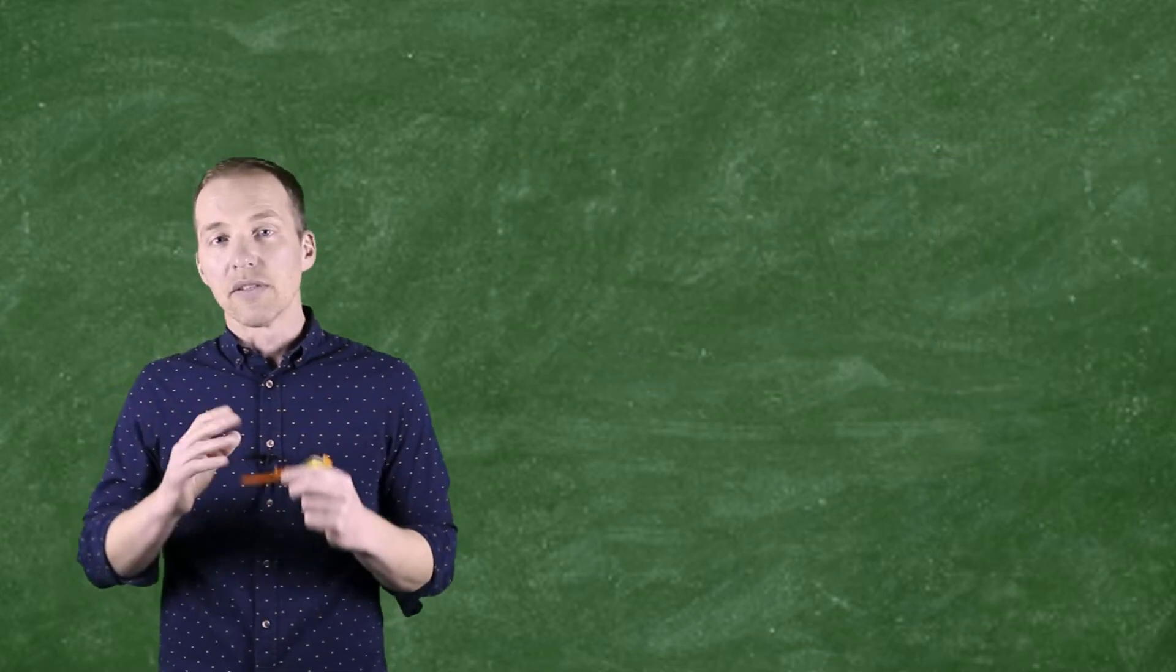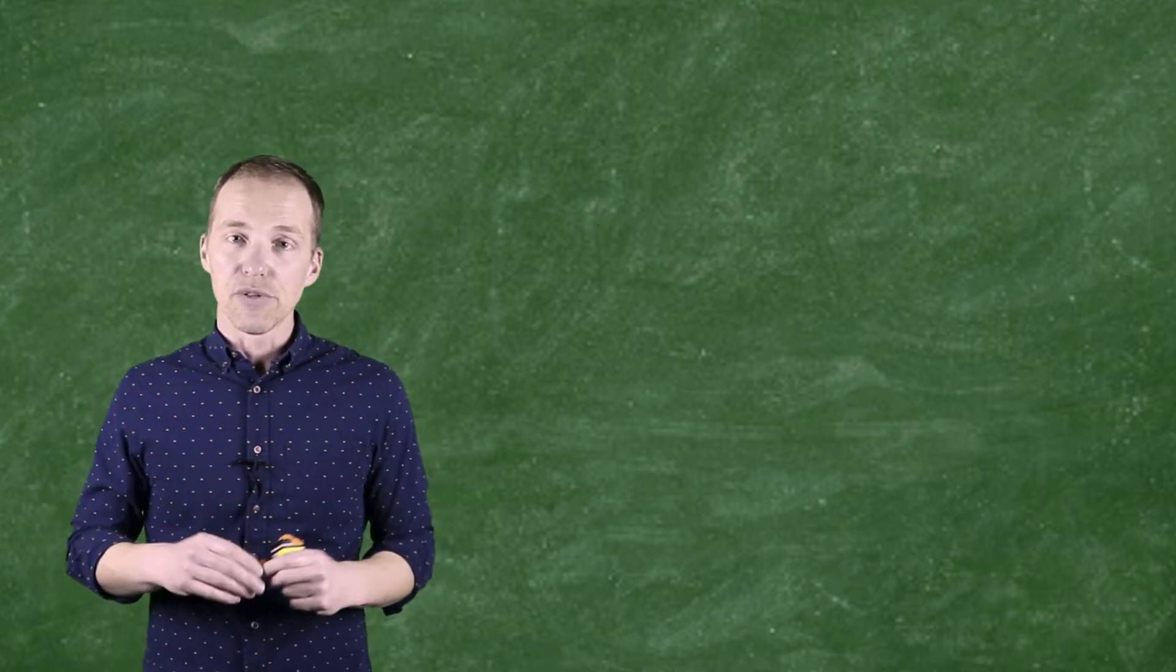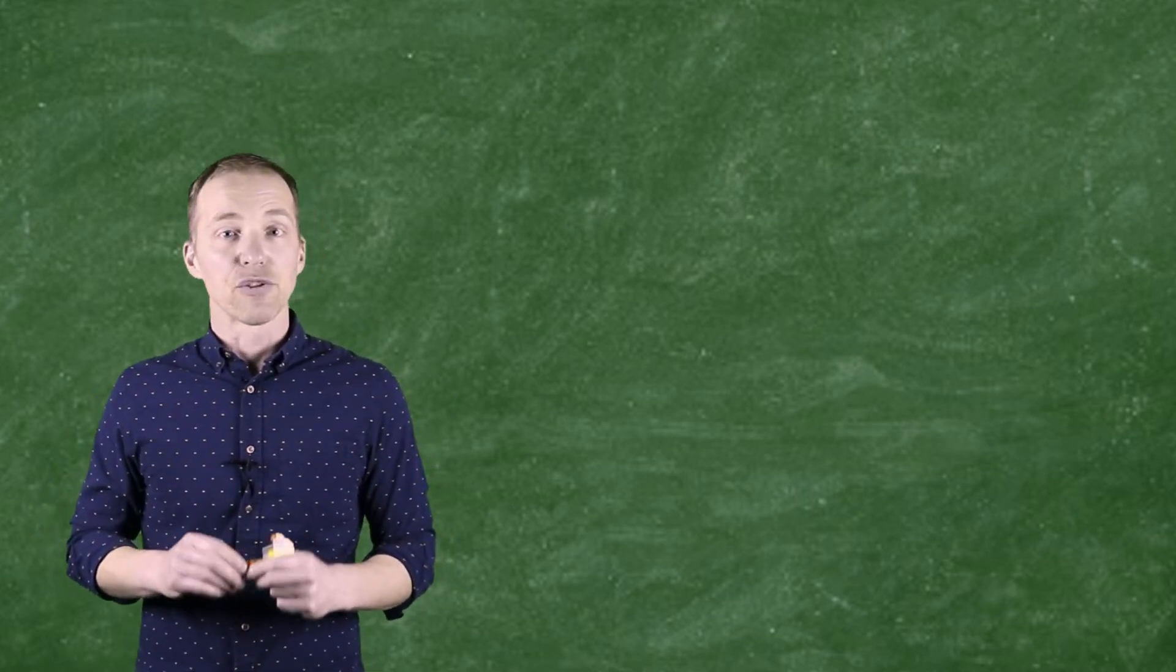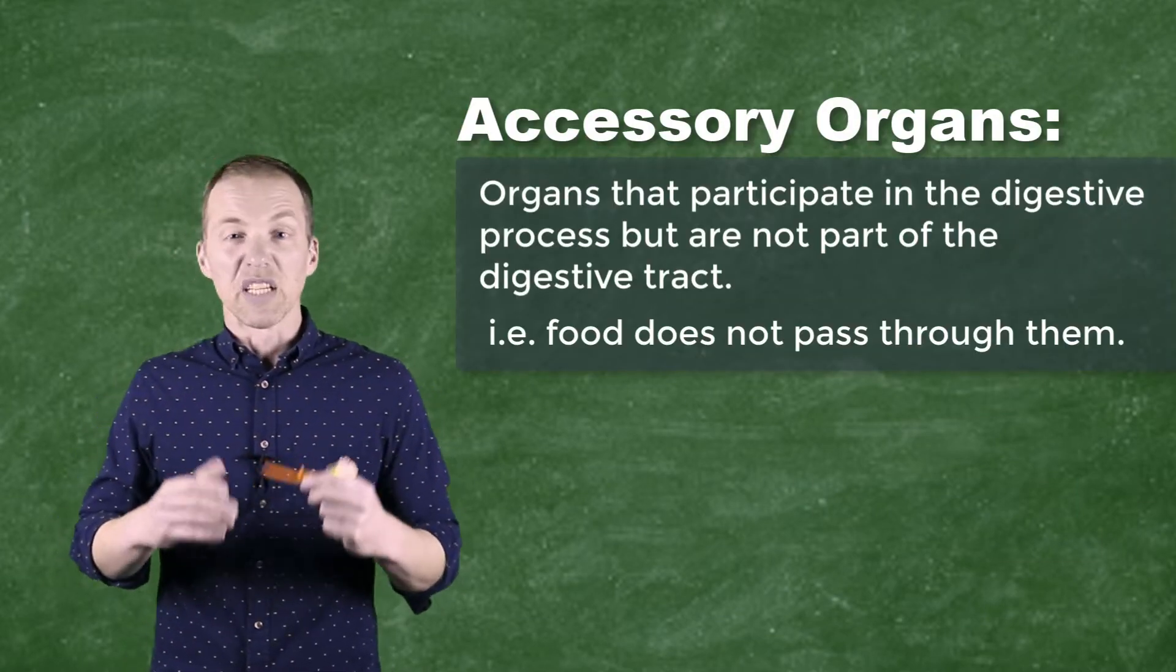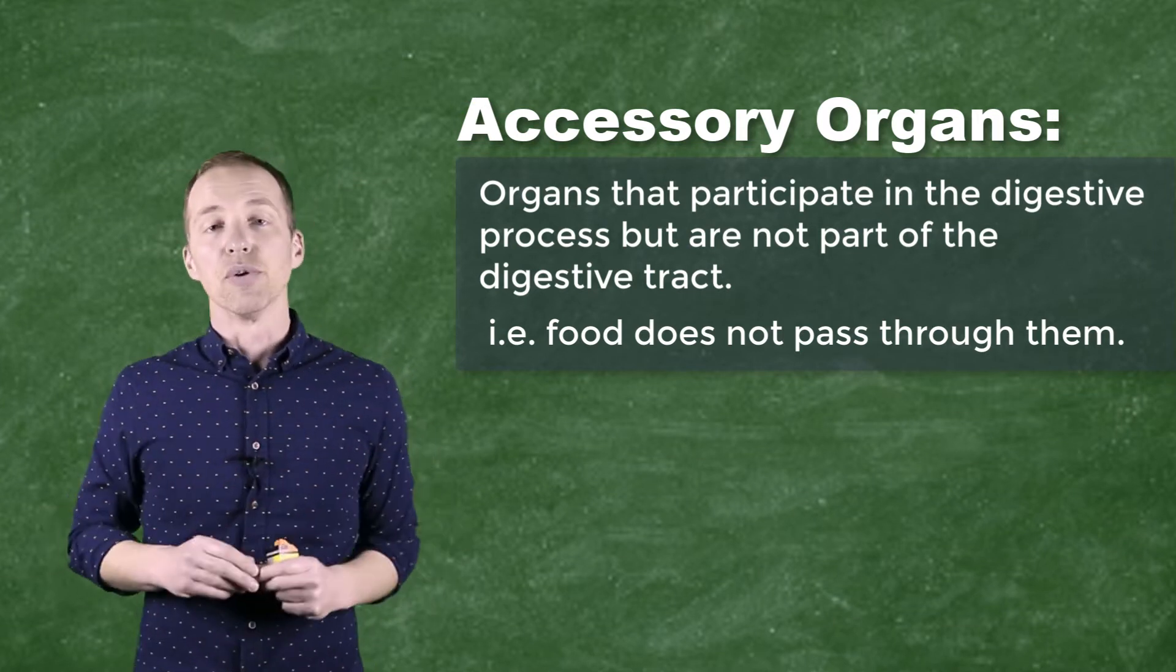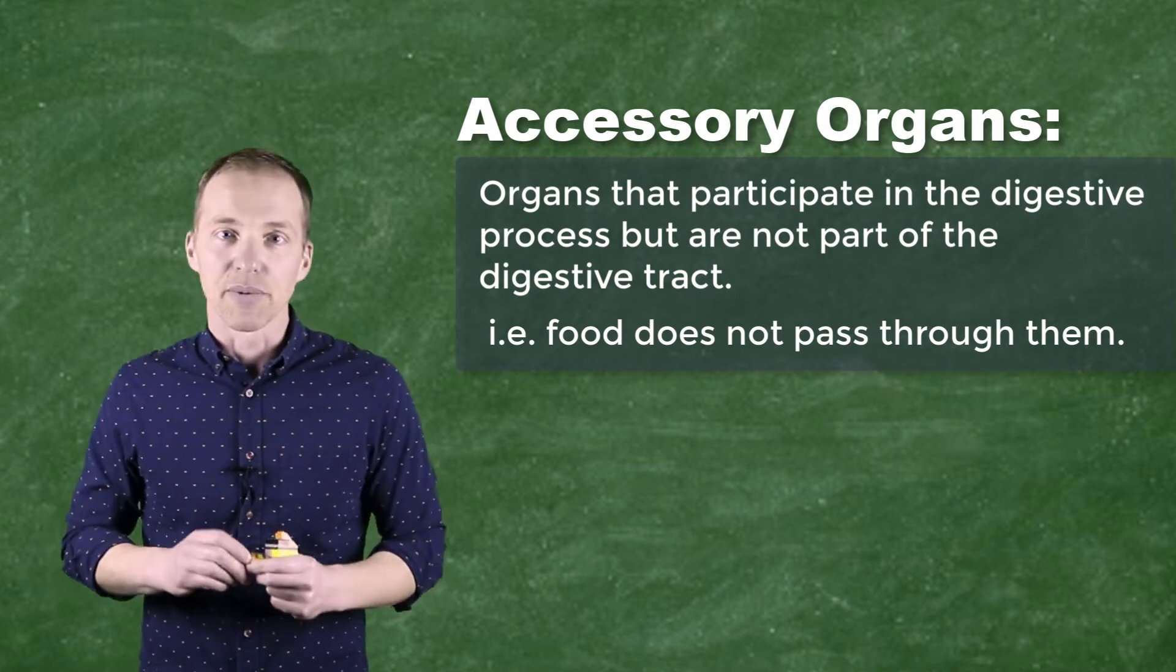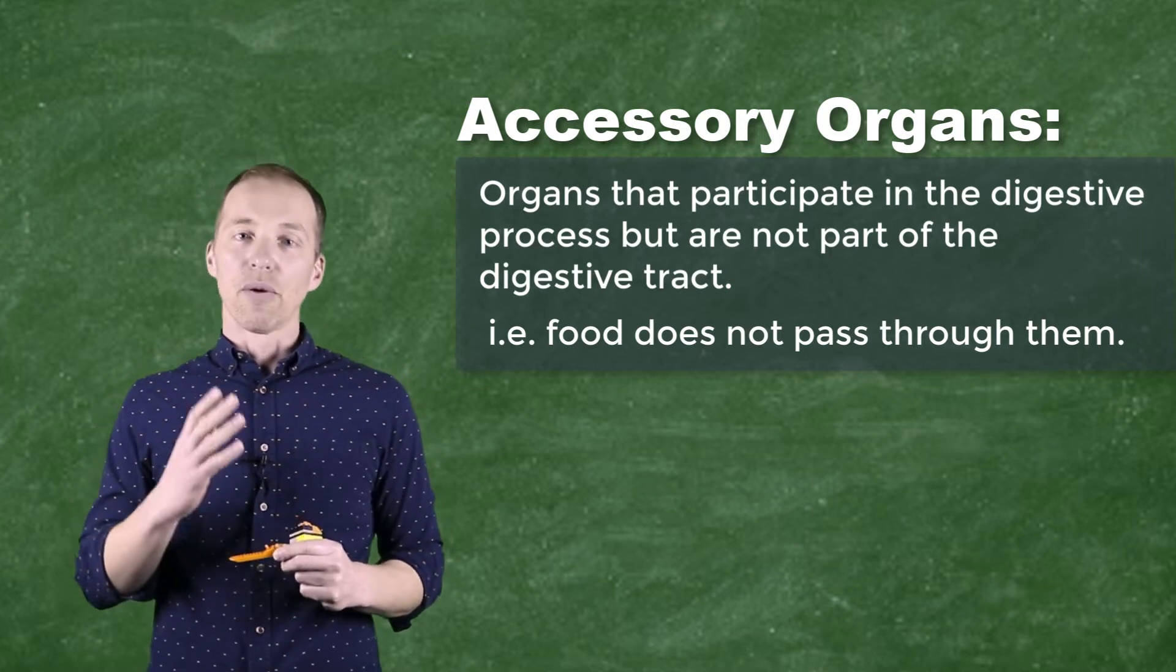Now, some of these enzymes are produced along the way in some of the tissues or organs that the food actually passes through, but most of them are produced elsewhere. And the organs that produce things for the digestive system, but that food and waste doesn't actually pass through, we refer to as accessory organs. And the first accessory organ that we see is in the mouth.